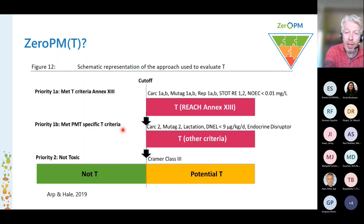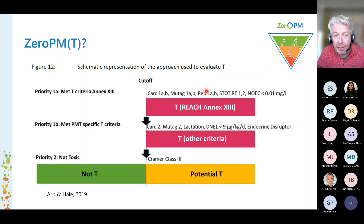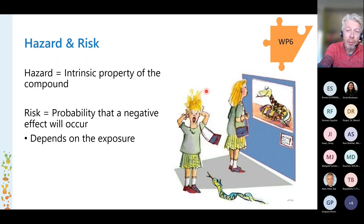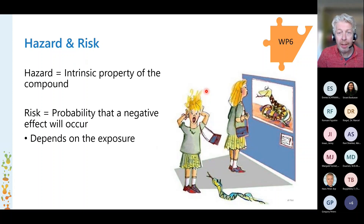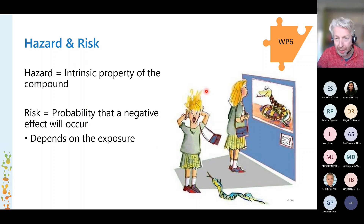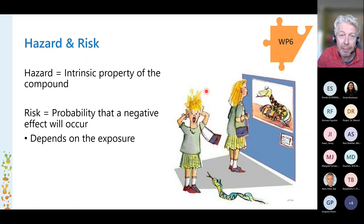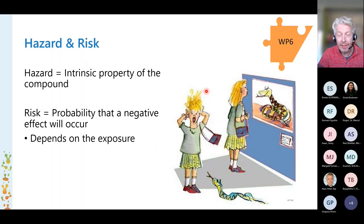We also would like to prioritize within Zero PM. What you see here on the screen is a classification based on hazard. To prioritize, it's also important that we know what the risk is. I'm sure you all know the difference between hazard and risk, but it's always nice to illustrate it in a picture like this. The hazard of a toxic compound is considered as an intrinsic property. If you look at the cartoon, the snake is exactly as poisonous in the right situation as in the left situation — that property of the snake does not really differ between the two situations.